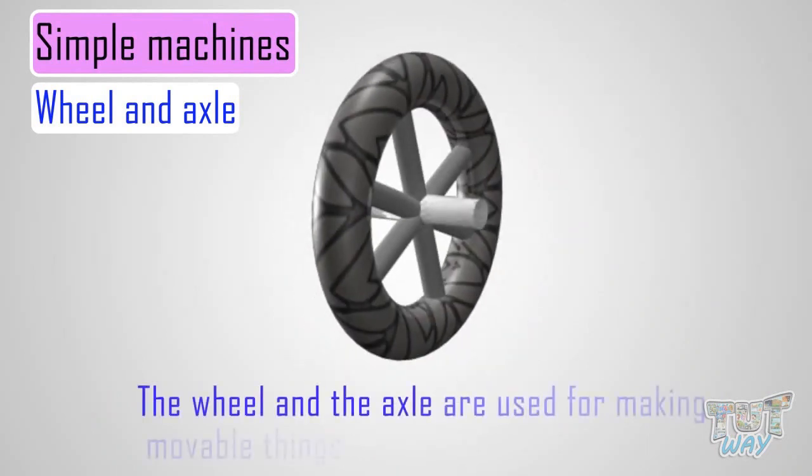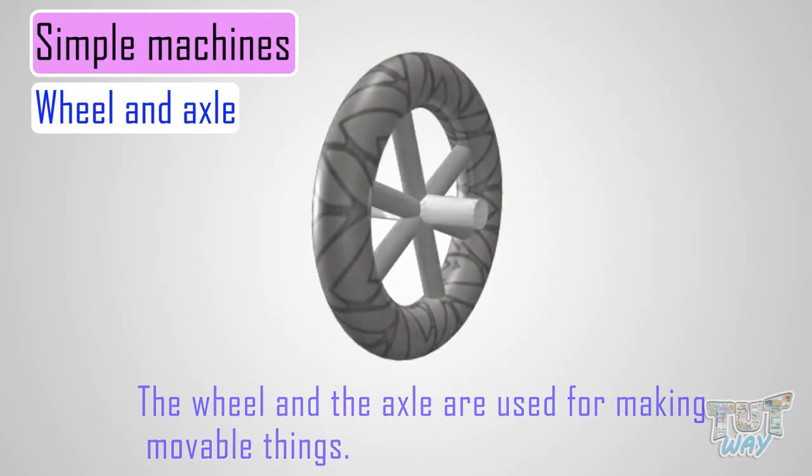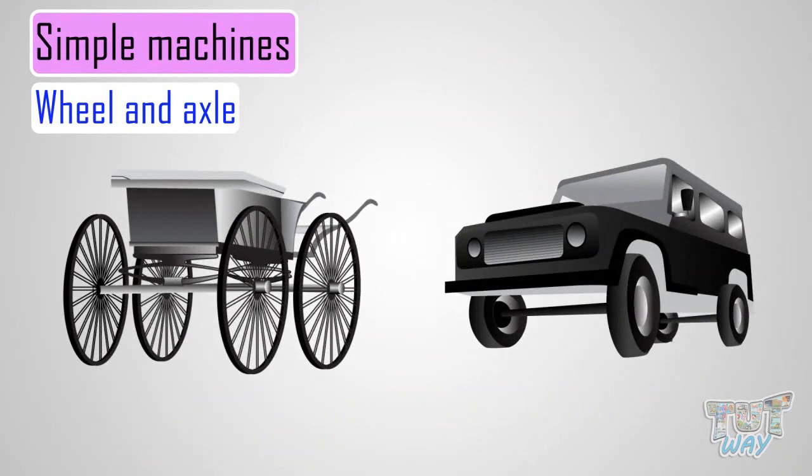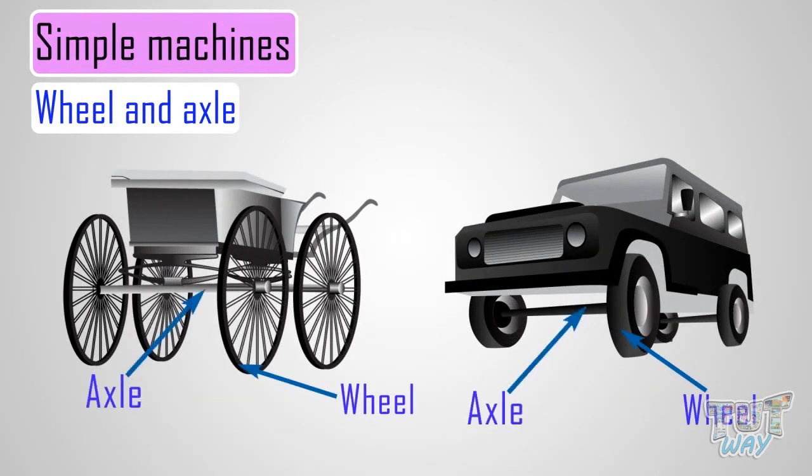The wheel and axle are used for making moving things. All vehicles are made using the wheel and axle.